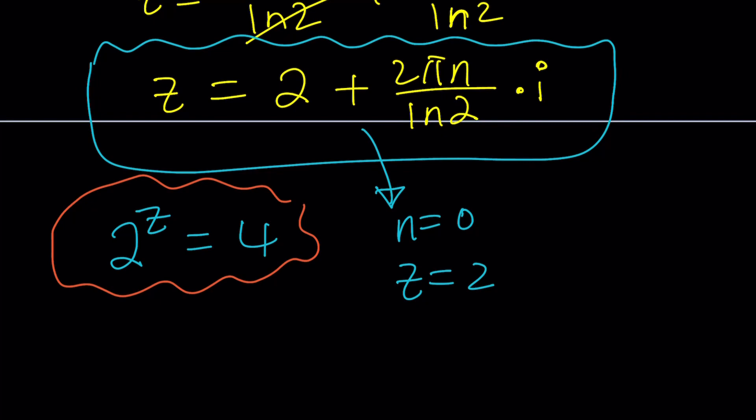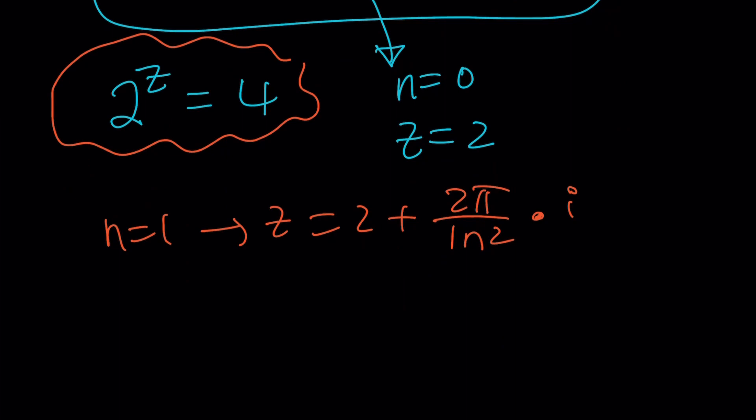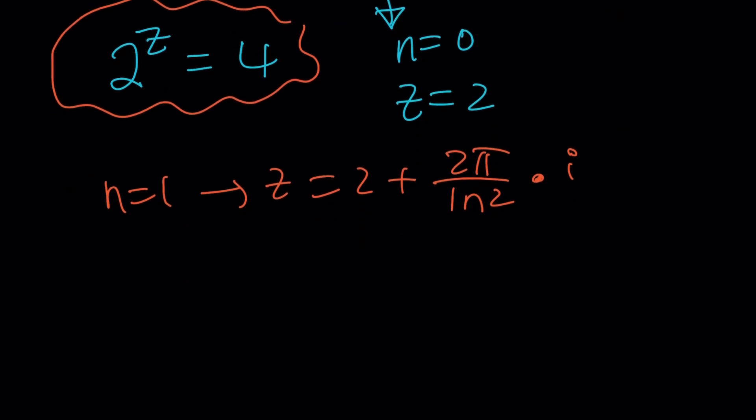Now, what happens if n is equal to 1? Then you get z equals 2 plus 2 pi over ln 2 multiplied by i. And whatever that is, the real part of all the solutions are always going to be at 2, which is the real solution to this equation.